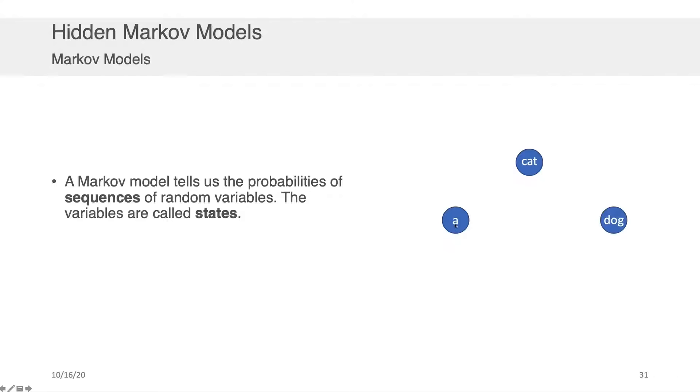So for example, if we were using unigrams and we had some very simple text consisting of only the word a, cat, and dog, then our vocabulary would just be these three tokens, and these would correspond to three states in our Markov model.